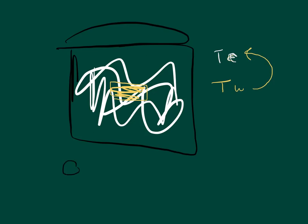The transfer of energy from the gold is a loss — a negative amount. The transfer of energy into the water is a gain — a positive amount — so it nets out to zero inside the system. This assumes no energy is allowed to escape. Any slight change would be due to failure to insulate, not anything happening internally.